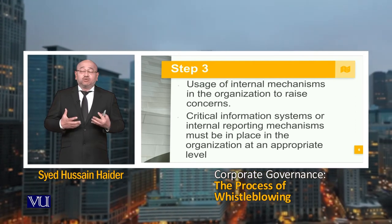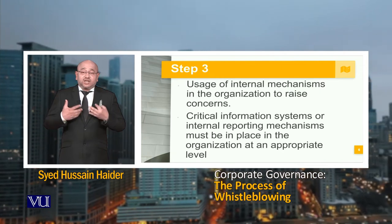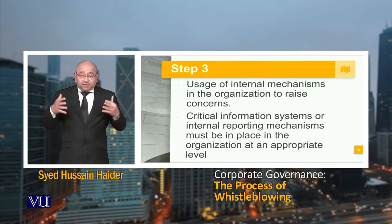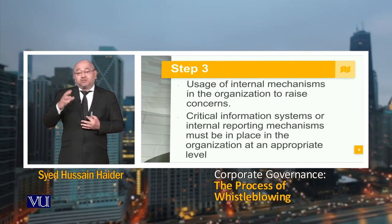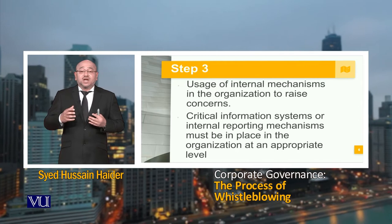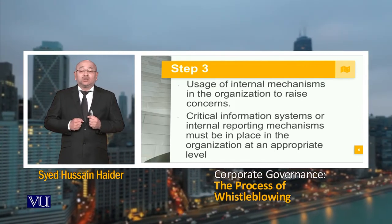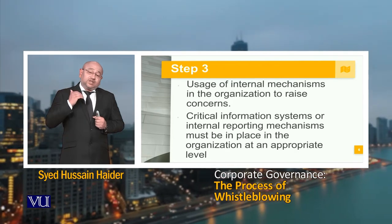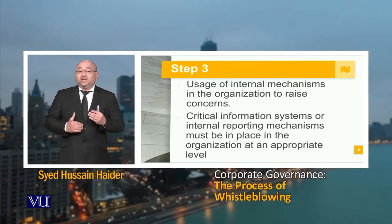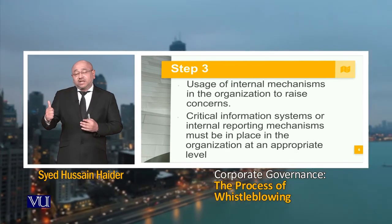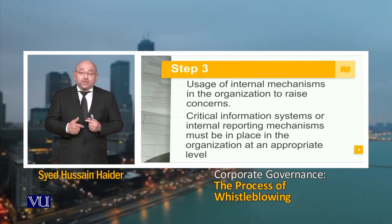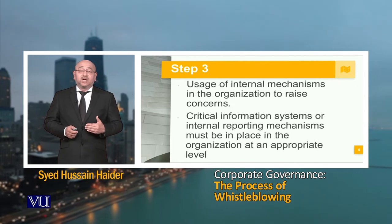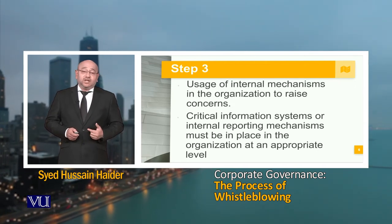Step 3 is the use of internal mechanisms within the organization to raise concerns. There should be proper platforms where whistleblowing can be done. Critical Information Systems (CIS) or Internal Reporting Mechanisms (IRMs) must be in place in the organization at an appropriate level, so that they can facilitate whistleblowing and encourage people to come out and share what is going wrong in the organization.